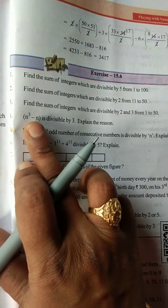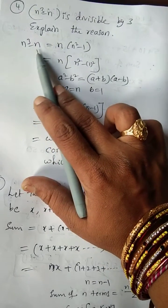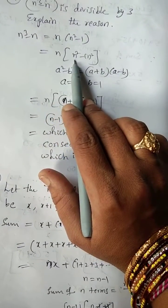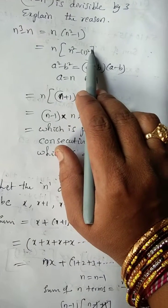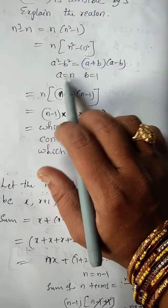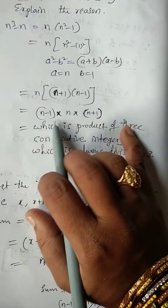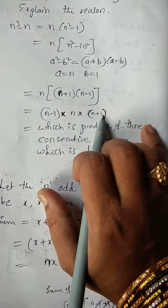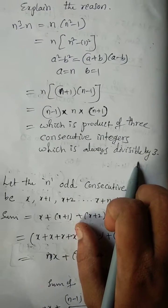Fourth question: n³ − n is divisible by 3 — explain the reason. Here, from n³ − n we take n common, giving n(n² − 1). Now n² − 1 is in the form a² − b², so it factors as (n+1)(n−1). Therefore n³ − n = (n−1) × n × (n+1), which is a product of 3 consecutive integers, and is always divisible by 3.